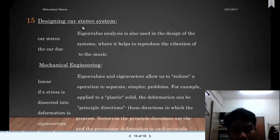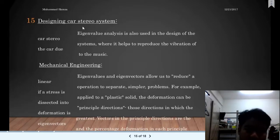Next, in mechanical engineering: Eigenvalues and eigenvectors allow us to reduce a linear operation to a simpler problem. For example, if stress is applied to a plastic solid, the deformation can be described in principal directions. Those directions in which the deformation is greatest are the eigenvector in the principal direction, and the amount of deformation is the eigenvalue.